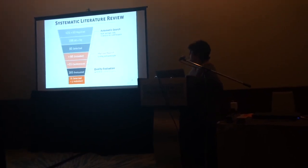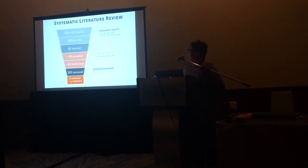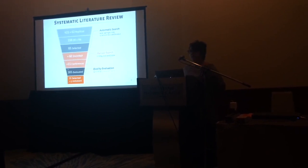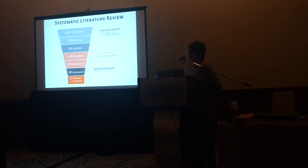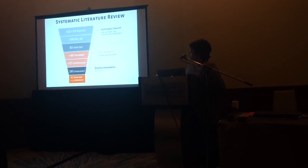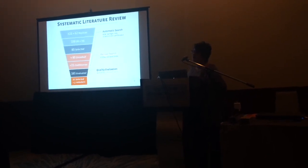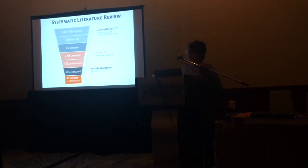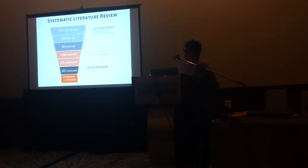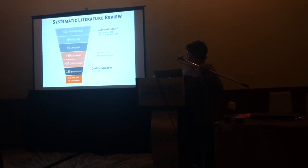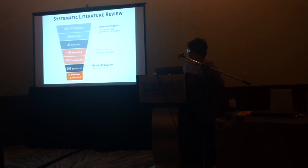We then proceeded with the manual search, adding 60 papers from snowballing of references, plus 21 papers from three related conferences: ACE, CHI Play, and DIGRA. After this, we were left with 165 papers for quality assessment, which we evaluated by 14 criteria and a cut-off point of 75%, resulting in 35 selected papers after splitting out 5 redundant ones.